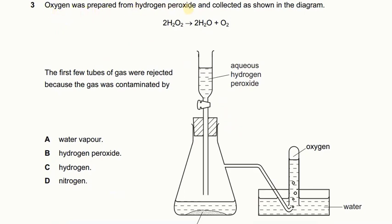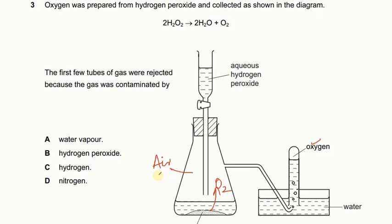Oxygen was prepared from hydrogen peroxide. The first few tubes of gas were rejected because the gas was contaminated. We are collecting the gas but did not collect the first few tubes. Initially in the gas container there would be air present. Oxygen gas produced from the reaction mixes with the air, and they both travel out. That means initially the oxygen gas would be impure because of the air. The major gas present in air is nitrogen.